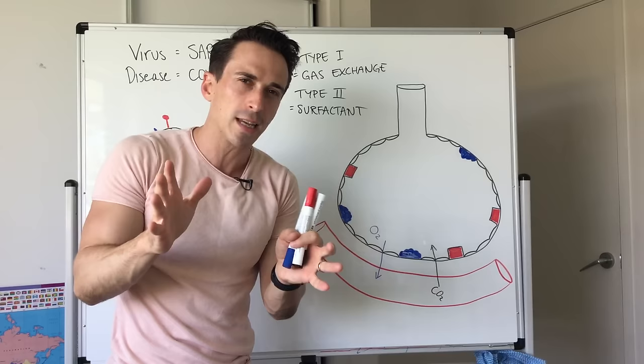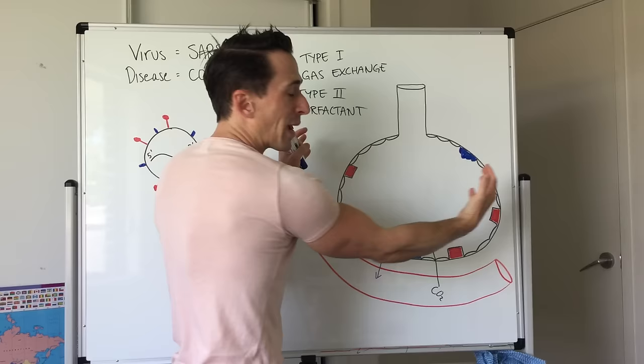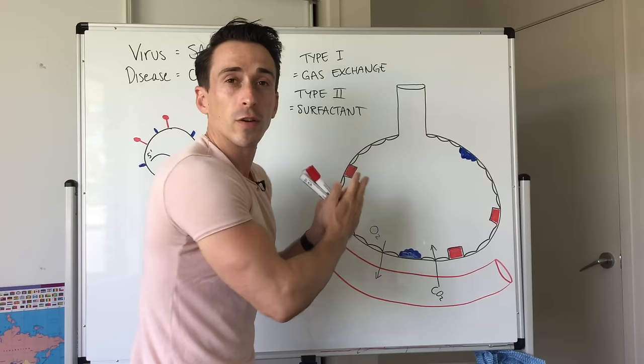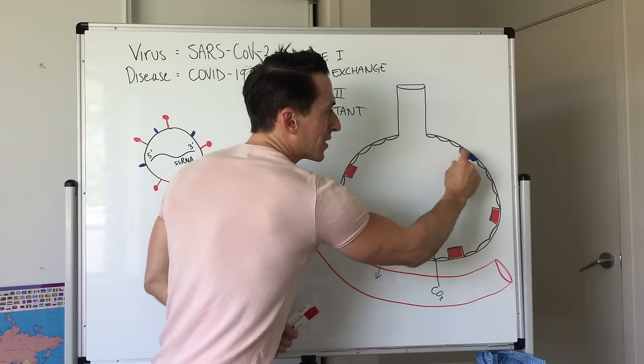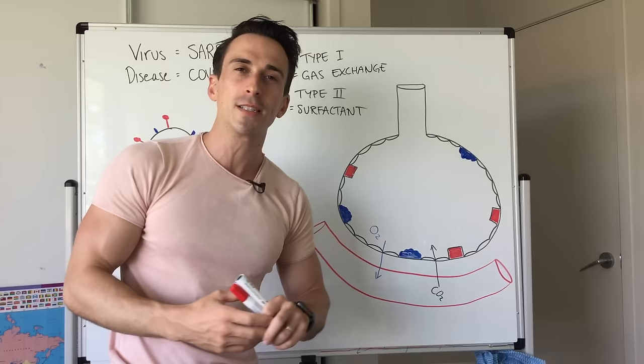When you take a breath in, the alveoli expand. When you breathe out, the walls are coming closer together. If there's water on those walls, the alveoli will come together and collapse. That is not something we want. So these type 2 pneumocytes produce surfactant. It's a detergent. It breaks the surface tension of that water, which means you can inhale and exhale and the water is no longer sticky.